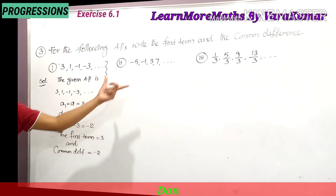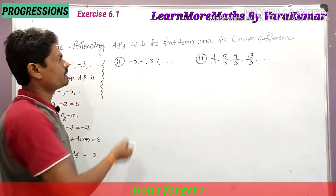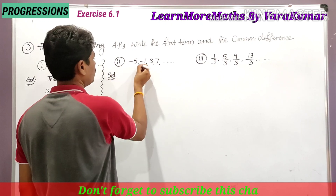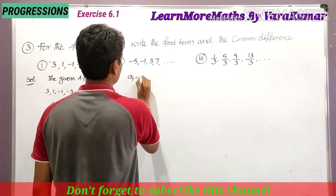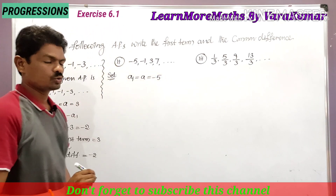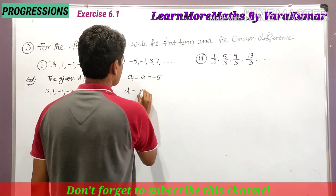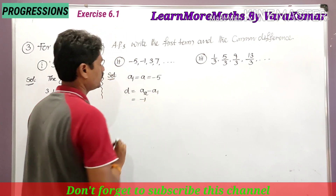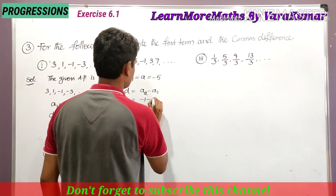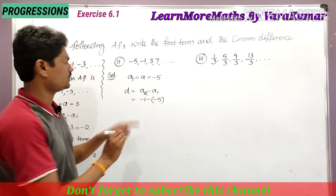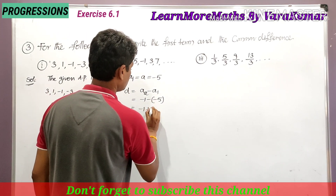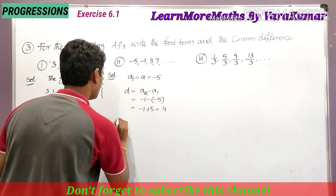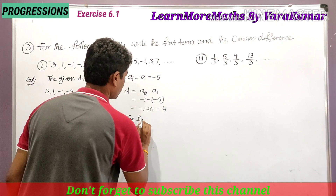This is the second part. He has given: -5, -1, -3, and 7. The first term a₁ is equal to -5. The common difference d is equal to a₂ minus a₁. Here a₂ is -1 and a₁ is -5. So that is -1 minus (-5), which gives -1 plus 5.